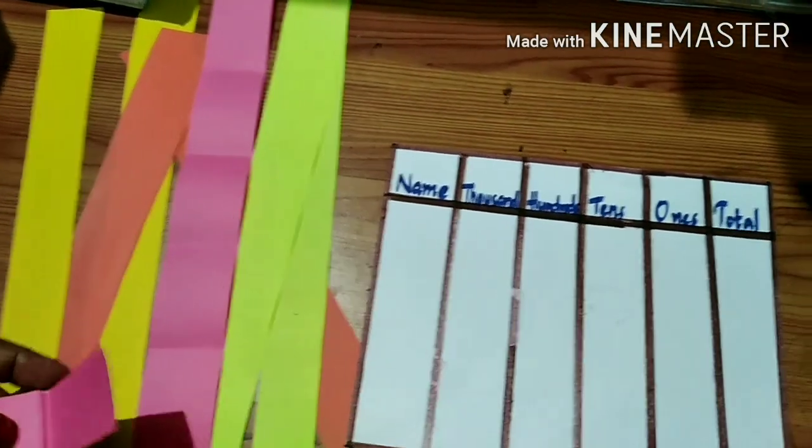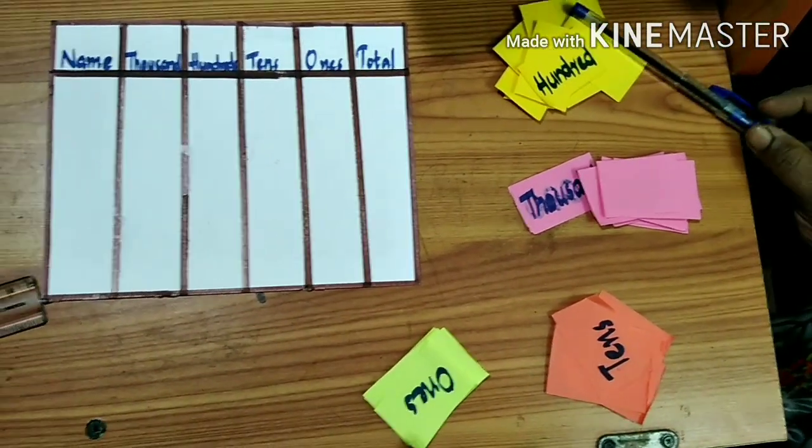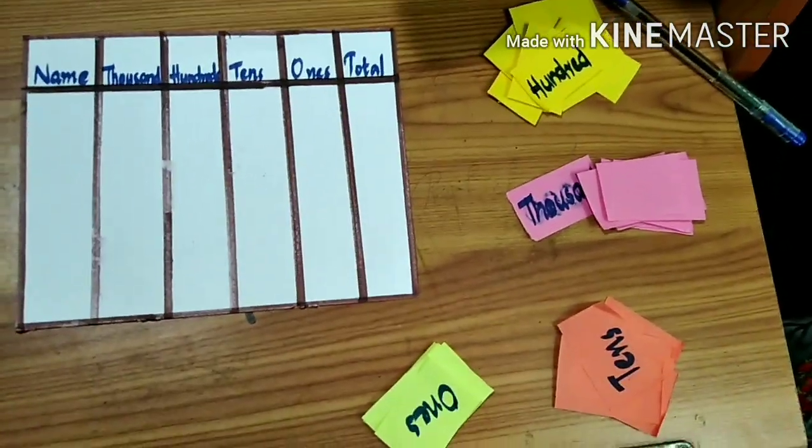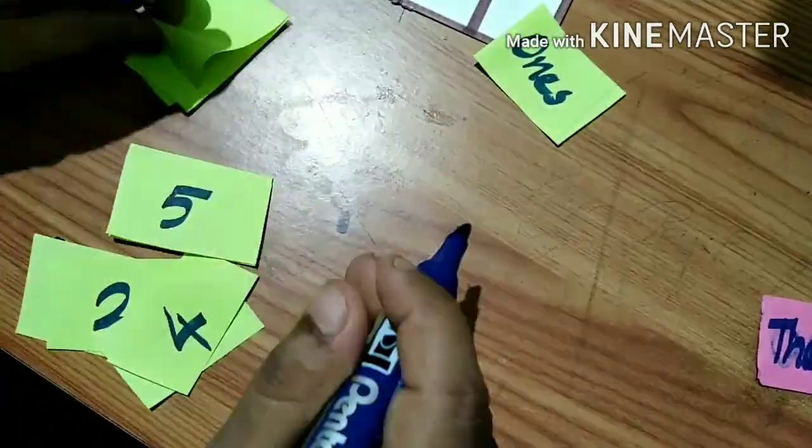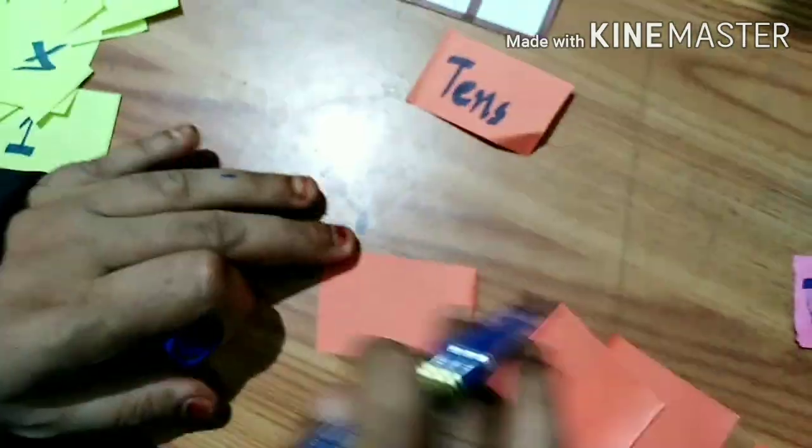First, cut the paper strips into 10 parts. Take one paper strip and write tens, ones, thousands, and hundreds.